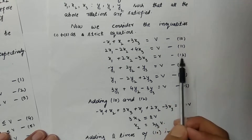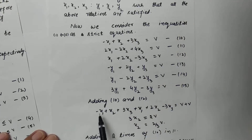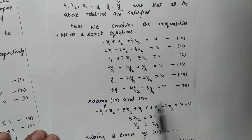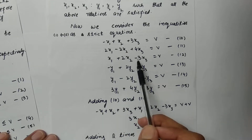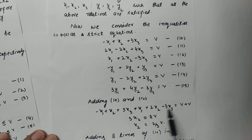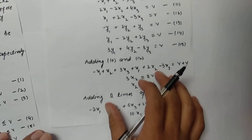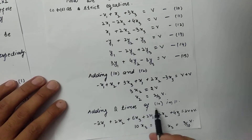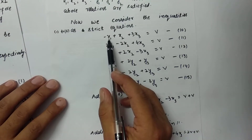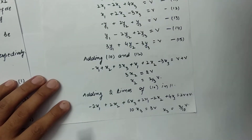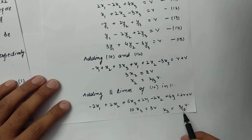To find the values of x1 and x2, I am going to add equations 10 and 12. After adding these I get: minus x1 plus x2 plus 3x3 plus x1 plus 2x2 minus 3x3 equals v plus v. After simplifying, I get 3x2 equals 2v, so x2 equals 2v/3. Then, multiplying equation 10 by 2 and adding with equation 12, after simplifying I get 10x3 equals 3v, so x3 equals 3v/10.